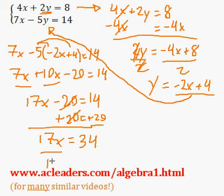Great, now I can just divide both sides by 17. And x is 34 over 17, x is 2.